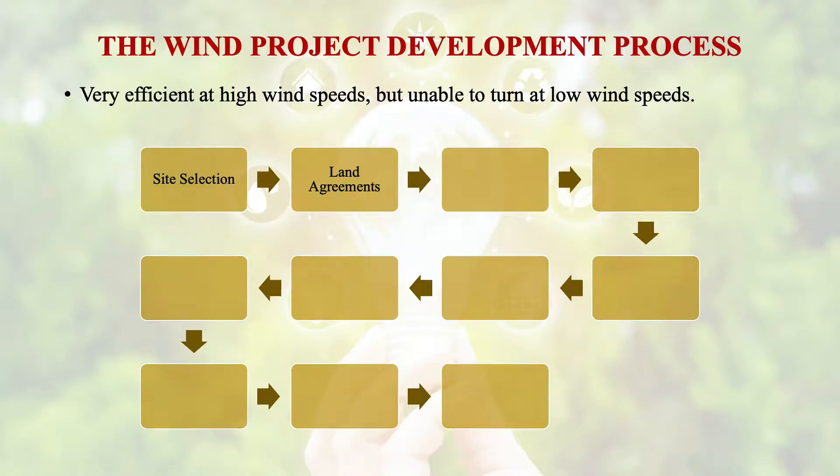What are the processes involved in wind project development? Step by step: first is site selection — we have to select a site where we will get the required average annual wind. The land should be free and generally infertile as well. Then comes land agreements, followed by wind resource assessment.